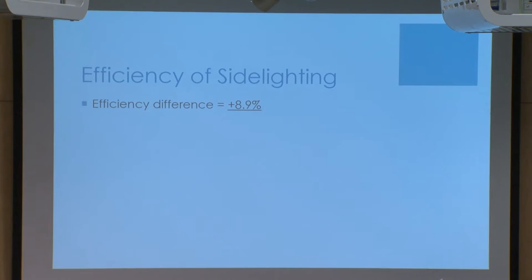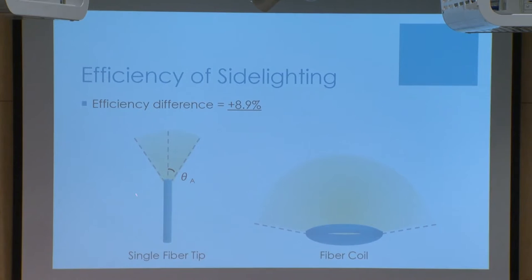You might think it's not very efficient, but the beauty of side lighting is that a single fiber tip has a numerical aperture restriction. If the sun is at a certain angle, no light gets through and the fiber is not operational. But if you coil the fiber and use side lighting, you don't have that numerical aperture restriction, so the fiber coil would be operational throughout the day.